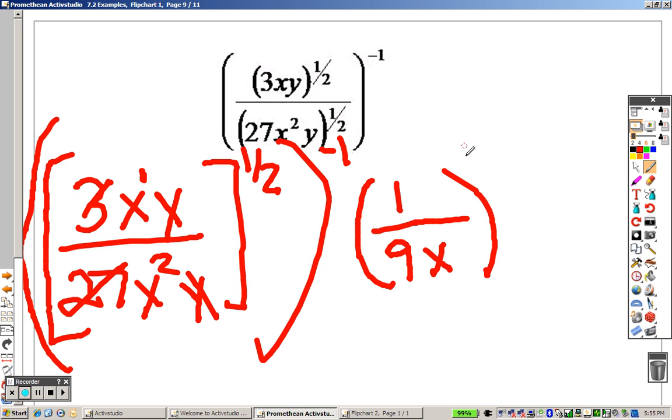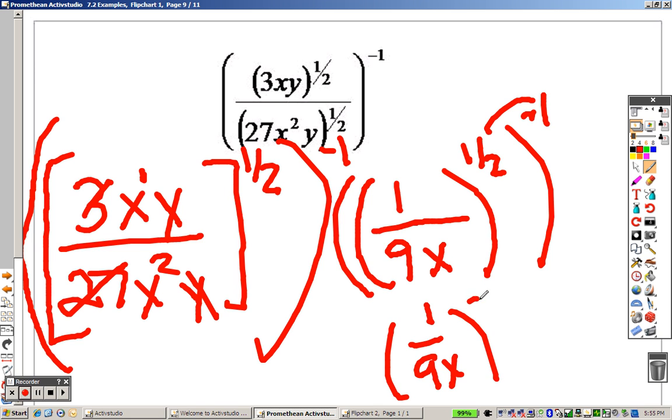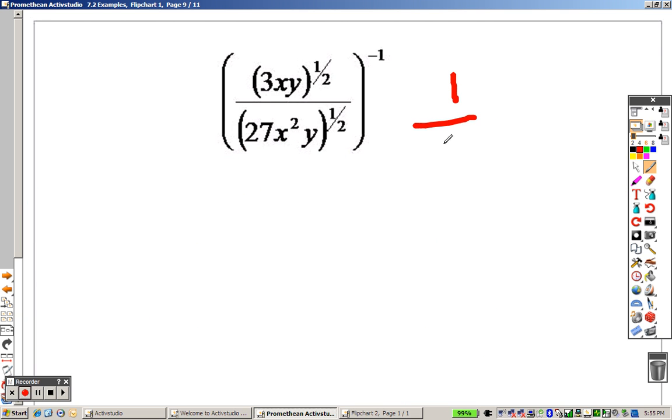All to the one-half, all to the negative 1. Well, if I multiply, that's like actually saying that I have 1 over 9x to the negative 1-half power. So really, now all I have to do, and let me rewrite that quick, 1 over 9x to the negative 1-half power is take that through to both items.